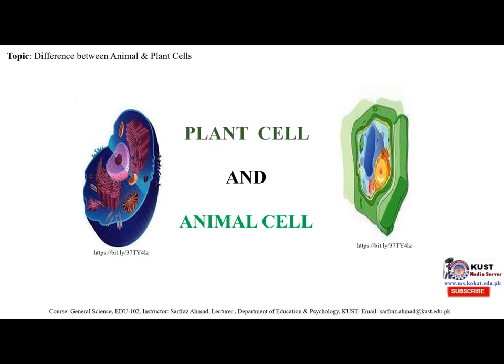The 13 main parts of the animal cell are: cell membrane, nucleus and nucleolus, nuclear membrane, cytoplasm, endoplasmic reticulum, Golgi apparatus, ribosomes, mitochondria, centrioles, cytoskeleton, vacuoles and vesicles.